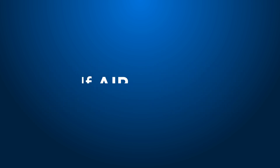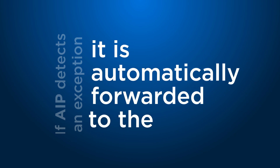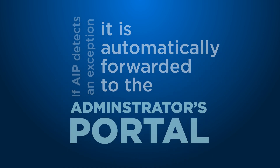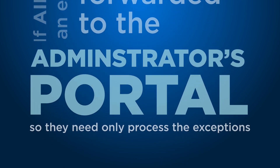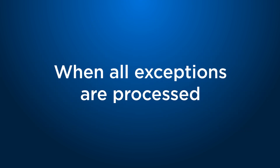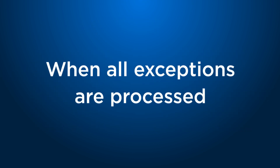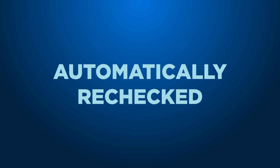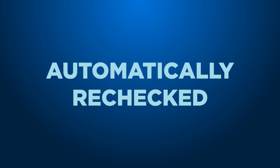If AIP detects an exception, it is automatically forwarded to the administrator's portal, so they need only process the exceptions. When all exceptions are processed by the administrator, the file is automatically rechecked by AIP and sent on to payment.